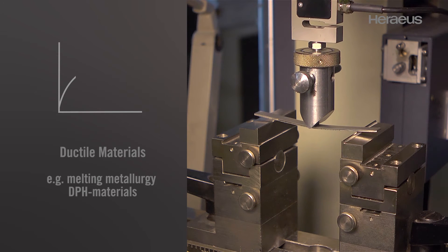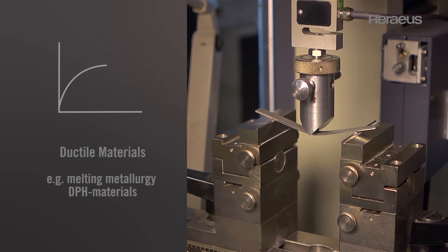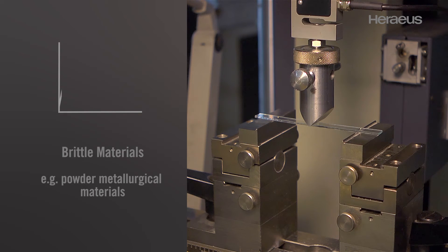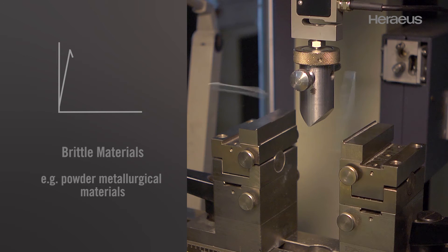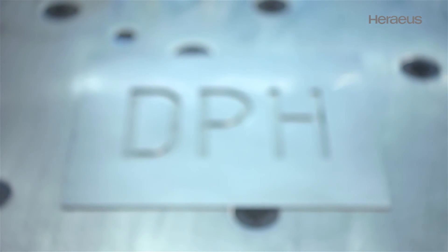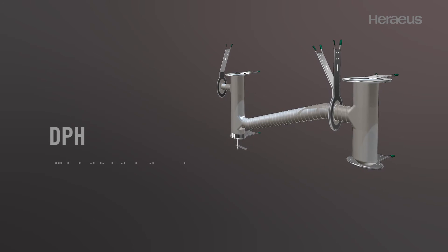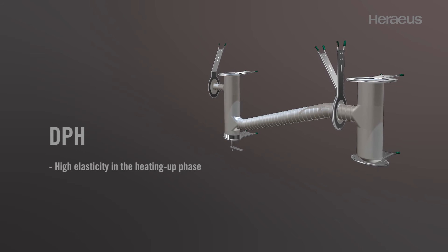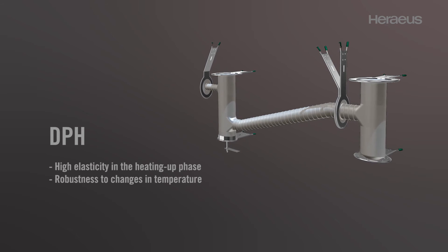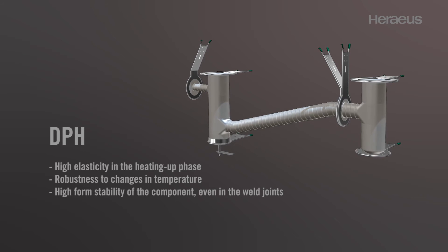Ductile materials compensate for thermal expansion which occurs in use without being damaged. In brittle materials, the expansion of components leads to material failure and cracks. Platinum components made of Herias DPH materials distinguish themselves through high elasticity in the heating up phase, robustness to changes in temperature, and high form stability of the component, even in the weld joints.